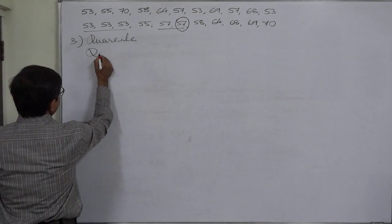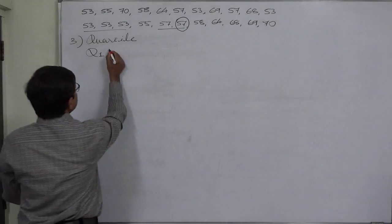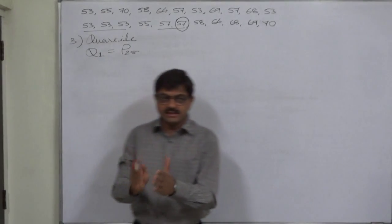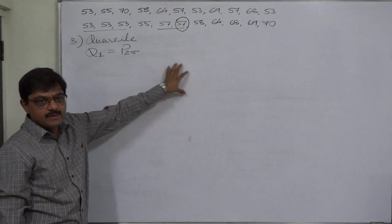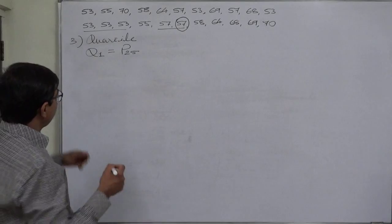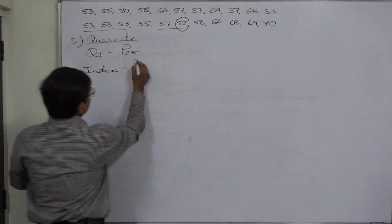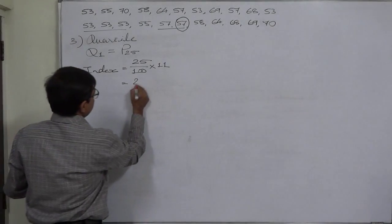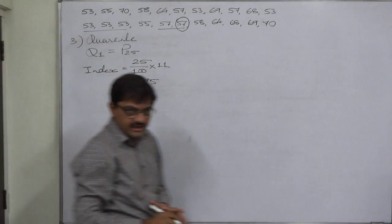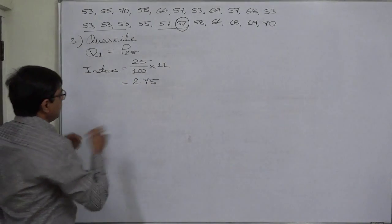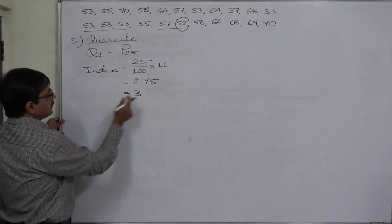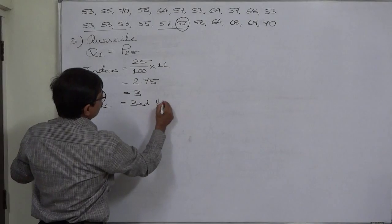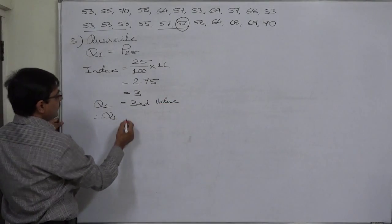Let us find the first quartile, Q1, which is the same as P25. The index is 25 divided by 100 times 11, which equals 2.75. Since the index is not an integer, we go to the next integer value, which is 3. That means the third value in this data is the first quartile. So Q1, or P25, equals 53.